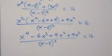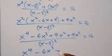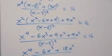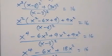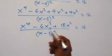Combining like terms, the 9x² and 9x² give us 18x², so we have x⁴ minus 6x³ plus 18x², all over (x - 3)², equals 16.